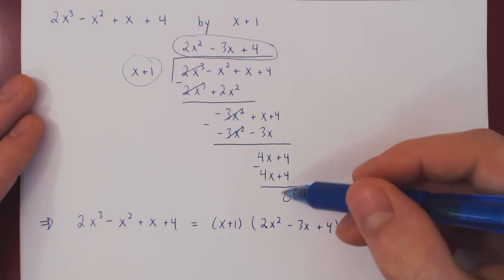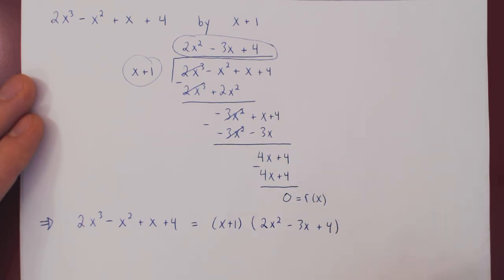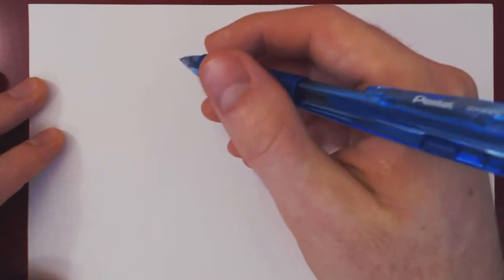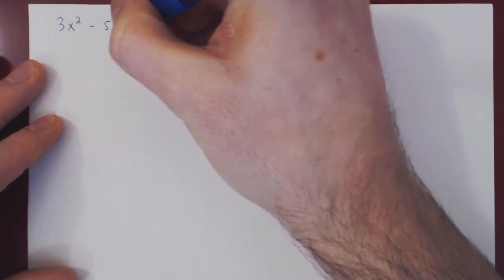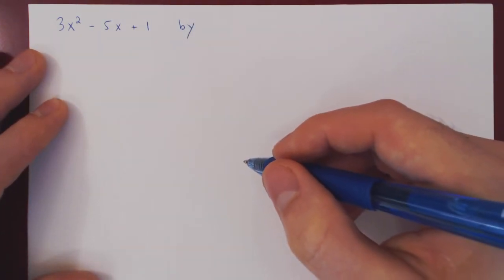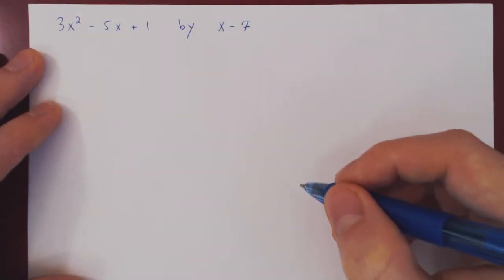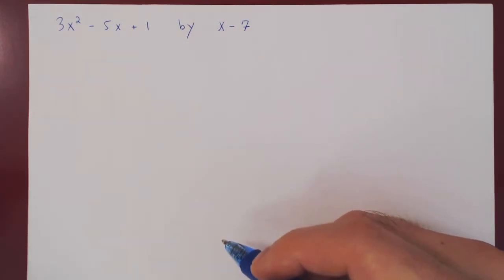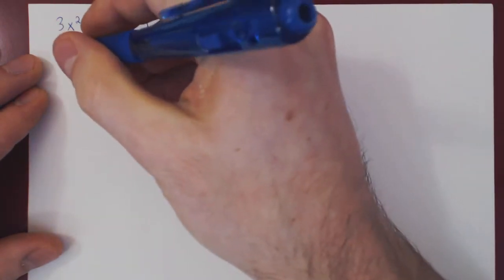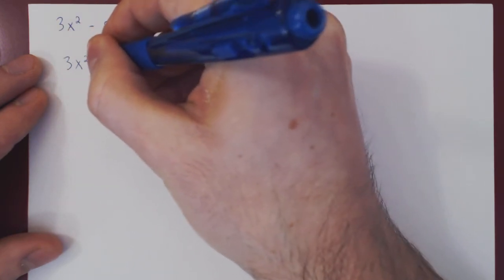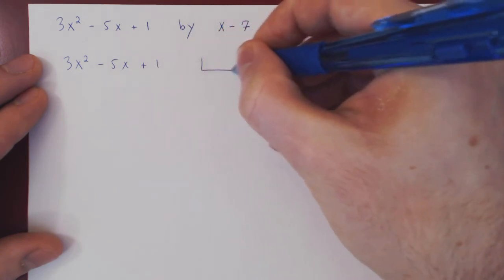Let's do one example where the remainder is non-zero, so there will be something extra that needs to be added. Let's go with 3x squared minus 5x plus 1, and we'll divide this by the linear polynomial x minus 7. I will write the long division in the French high school style — if you went to an English high school, you can write it backwards.